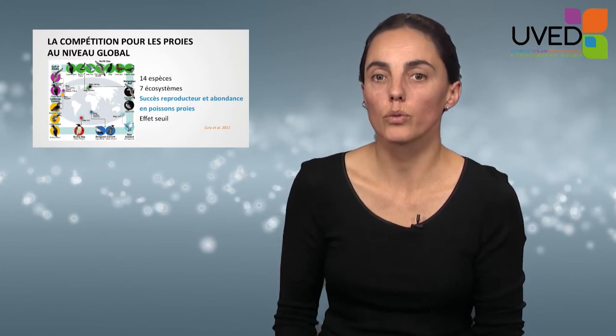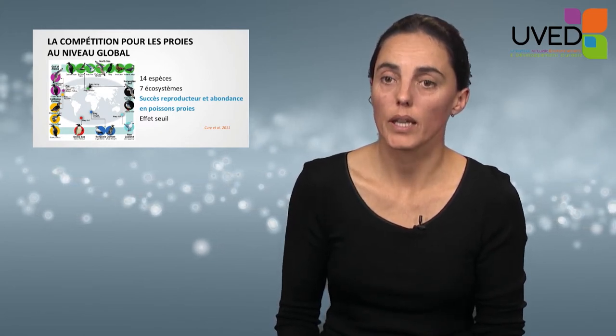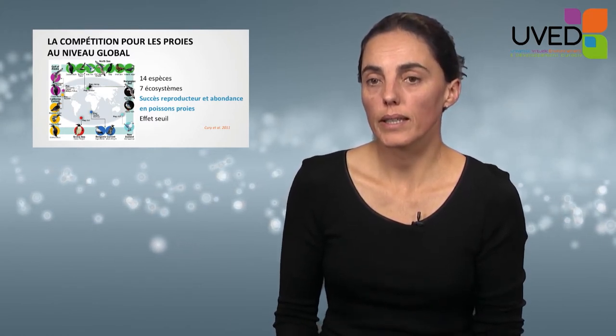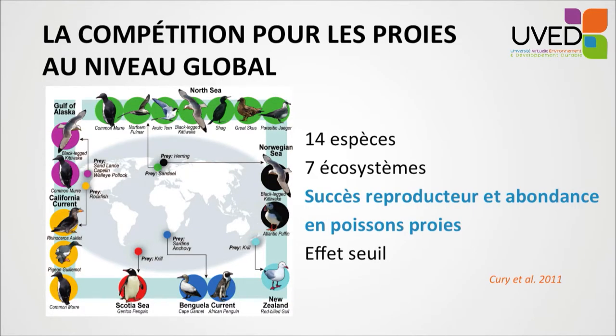The third type of interaction is direct competition for prey. If fisheries take many of the fishes that serve as prey for seabirds, the seabirds will struggle to feed themselves and their offspring. To confirm this quantitatively, researchers compared data from 14 species across seven ecosystems. They compared reproductive success and prey fish abundance. For all species across all seven ecosystems, they showed a direct relationship: reproductive success decreases as prey abundance decreases, with a non-proportional threshold below which we should never go to preserve seabird populations.